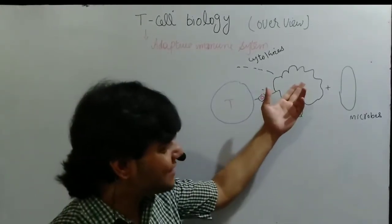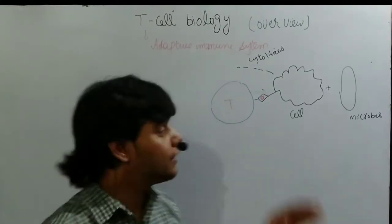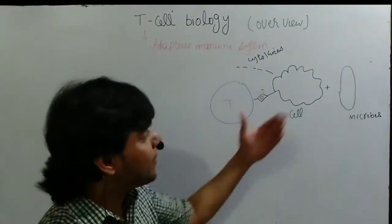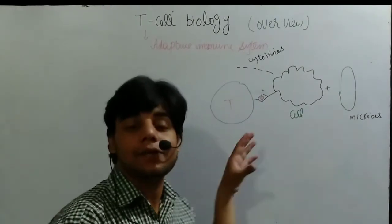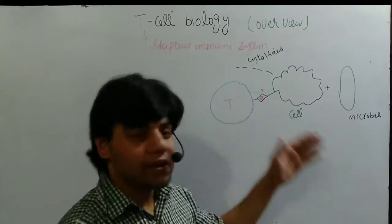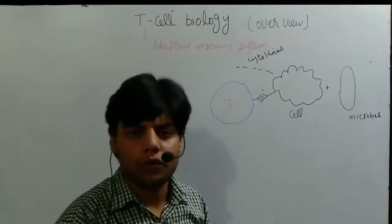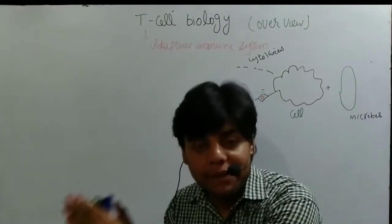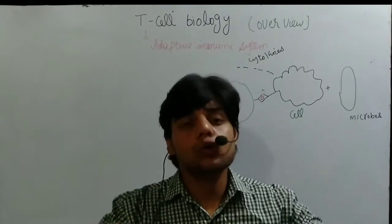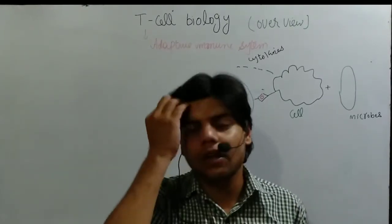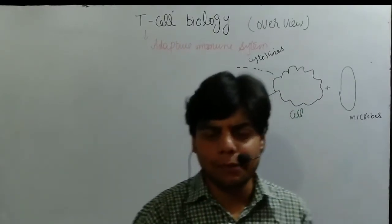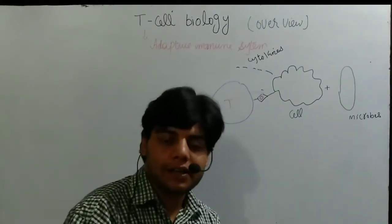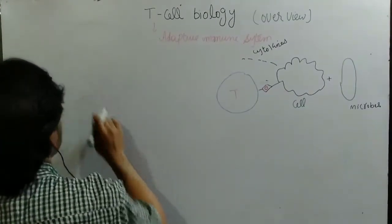If the cell is infected with viruses, it will secrete interleukins that activate cytotoxic T lymphocytes. If infected with bacteria, it will activate macrophages. If infected with other microbes like algae or fungi, it will activate B cells, the complement system, or other immune components. At each time, one specific immune system will be activated. This is the basic concept behind T cell function.